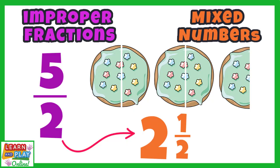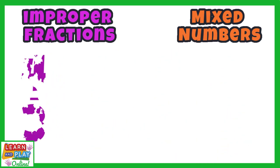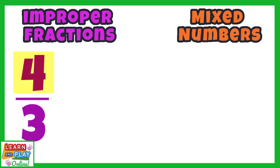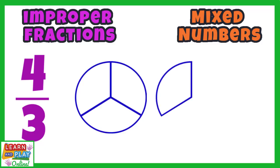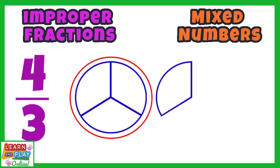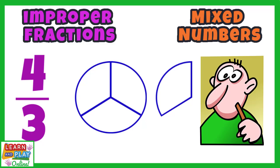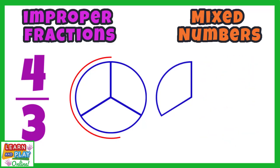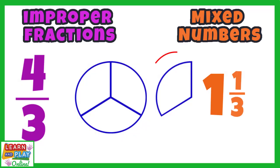Let's explore improper fractions and mixed numbers further with another example. Let's look at the fraction 4 thirds. We know this is an improper fraction because the numerator is greater than the denominator. The numerator, 4, tells me that I have 4 equal parts of something, and the denominator, 3, tells me that the whole was divided into 3 equal parts. You can see that there are 4 equal parts and that the whole was divided into thirds. We can see that we have 1 whole circle and 1 third of a circle, so the mixed number is 1 and 1 third.